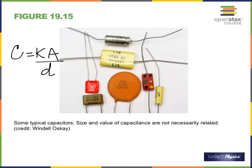Mica has a dielectric constant of seven. If you start with air between the plates — dielectric constant of one — and then insert mica, the capacitance increases seven times. So by changing the dielectric material, you can significantly increase the capacitance.